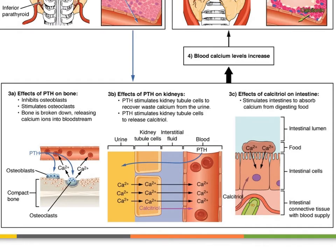In addition to affecting bone tissue, PTH also affects the kidneys. PTH leaves the bloodstream, finds receptors on the distal convoluted tubules, and stimulates the reabsorption of calcium from the filtrate in the lumen of the tubule. That calcium is then returned to the blood, returning calcium levels in the blood back to homeostatic levels.